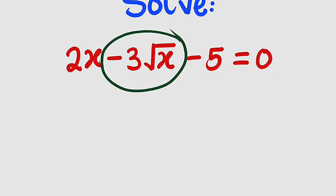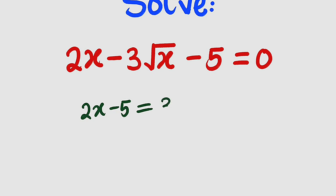First of all, let us take this term to the other side. So we have 2x minus 5 to the left, and this is equal to positive 3 root x to the other side.